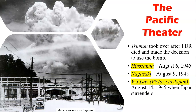Truman, who took over after FDR died, made the decision to use the atomic bomb to end the war. FDR had held the presidency so long that a constitutional amendment was put in place limiting a president to up to eight years. Truman, who never actually graduated college, ordered the bombings: Hiroshima was bombed on August 6th, 1945, and Nagasaki on August 9th, 1945. Then V-J Day — Victory in Japan — took place on August 14th, 1945, when Japan surrendered.